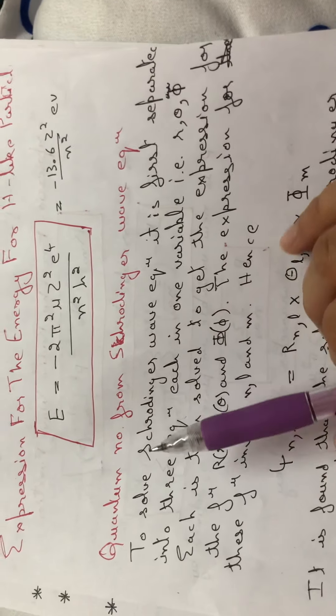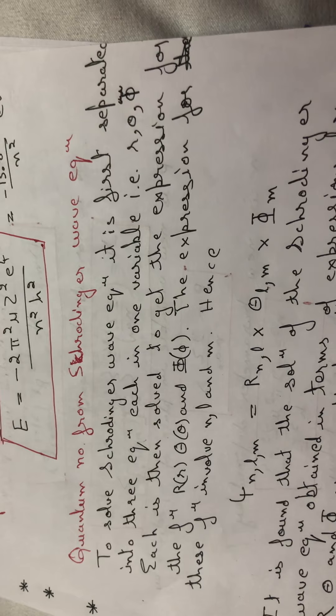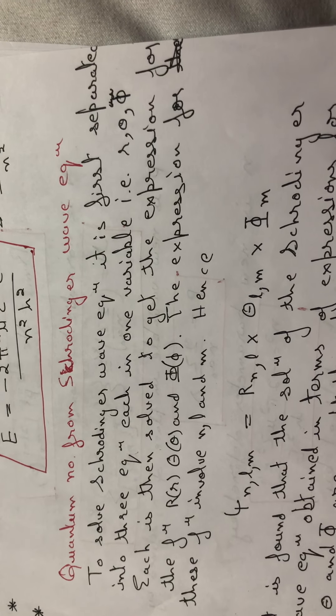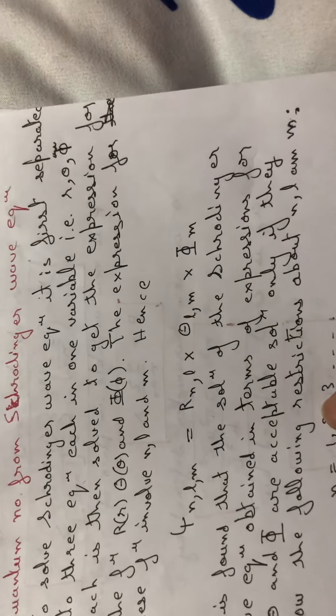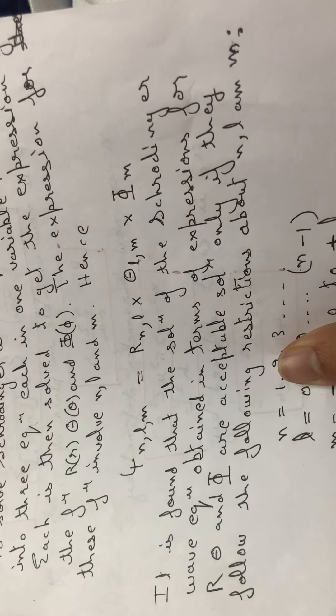The quantum numbers from the Schrödinger wave equation: an important result of solving the Schrödinger equation for the hydrogen-like particle is that it is first separated into three equations, each in one variable — r, θ, and φ. Each is then solved to get the expression for R, Θ, and Φ. The expressions involve three quantum numbers n, l, and m. The radial function R depends upon n and l; Θ depends upon l and m; Φ depends only upon m. The solutions are acceptable only if they follow specific restrictions.